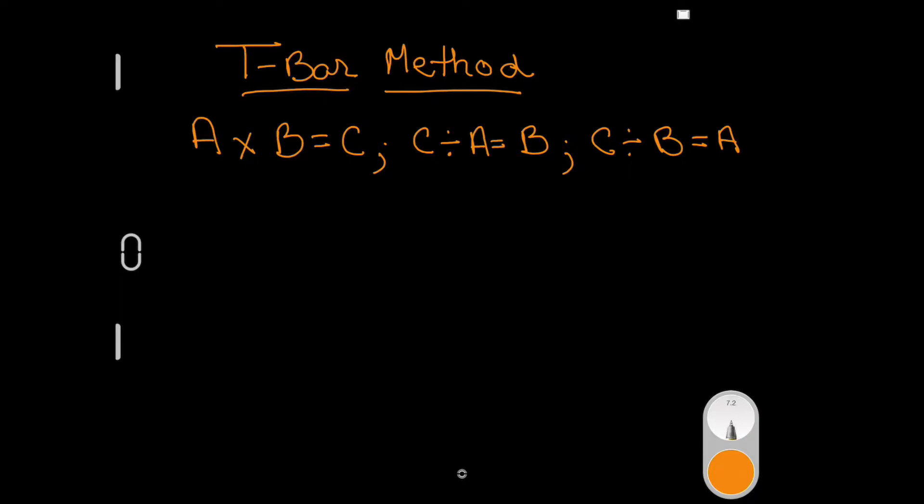That's where the T-bar comes in. A T-bar looks like this: a T. When you fill out the numbers, it's telling you whether you're going to multiply or divide. When you have two numbers at the bottom you're going to multiply, and if you have two numbers at the top you're going to divide.